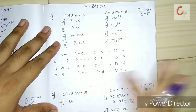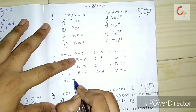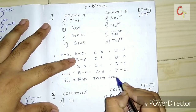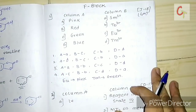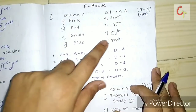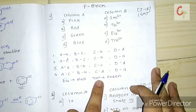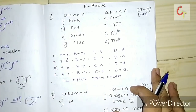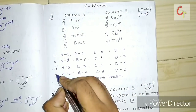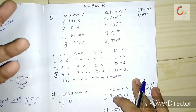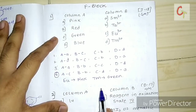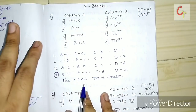Europium gives pink color and terbium gives green color. I have gone through two or three reference books but did not get a clear answer for red or blue. However, europium definitely shows pink color and thulium shows green color, so the correct answer is option 4.